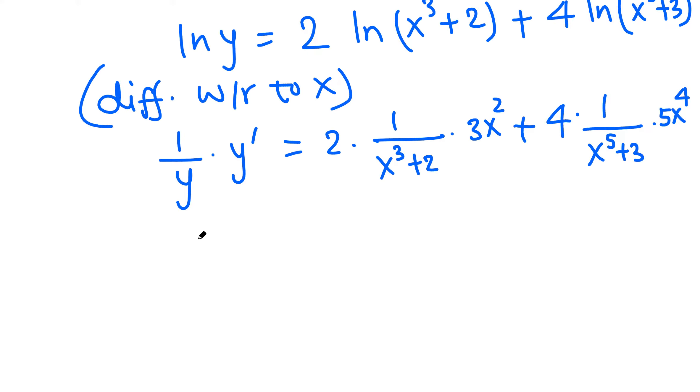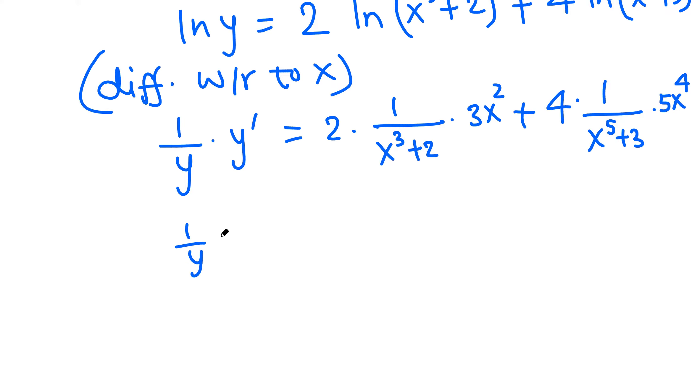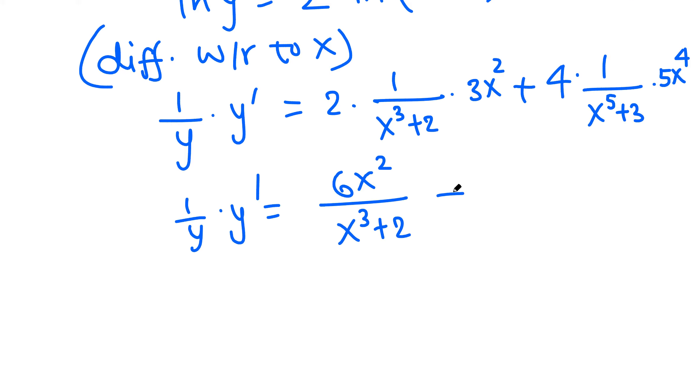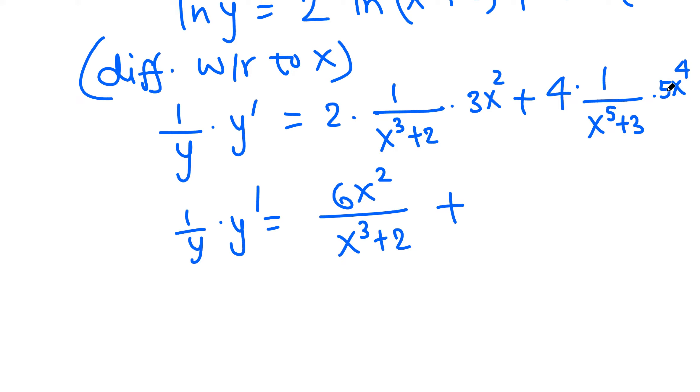We have here 1/y times y prime on the left, so do not cancel anything, because plus means this is a block—same here, this is a block. On the top, 2 times 3 is 6x² over (x³ + 2). Here, 4 times 5 is 20x⁴ over (x⁵ + 3).